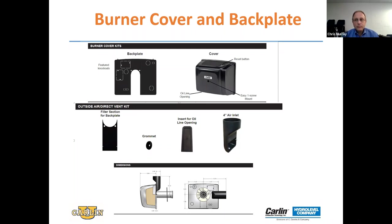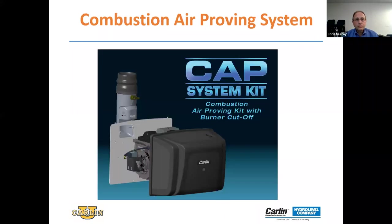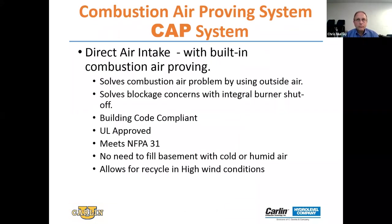What we've done is taken our existing cover design, modified and improved it. Now we have what we call our CAP system — Combustion Air Proving System. It's able to bring in outside air directly with a built-in air proving switch. We've solved a few problems: we're able to use outside air so there's less concern for what's happening inside the house, and we're able to solve blockage concerns where if there is a blockage — whether permanent or temporary — even a sudden burst of high wind coming across the air intake can cause a negative pressure on that intake.